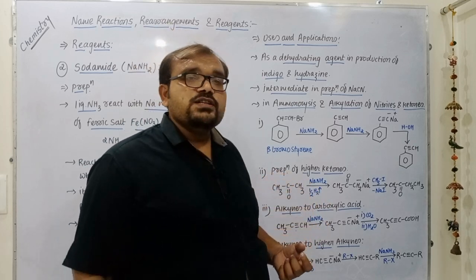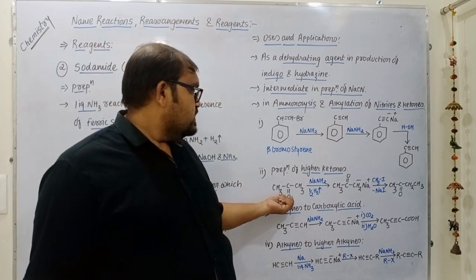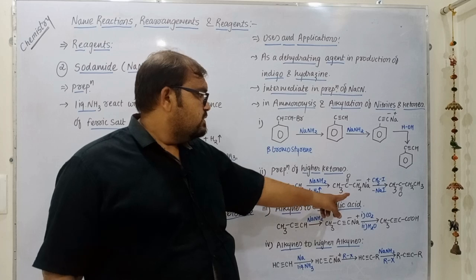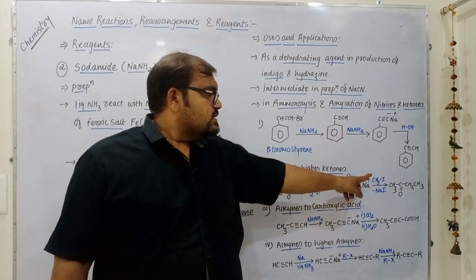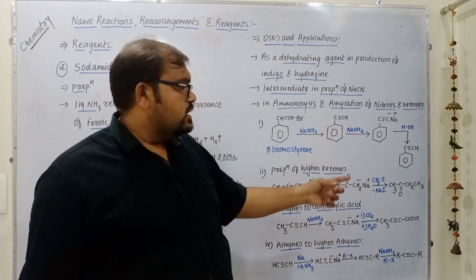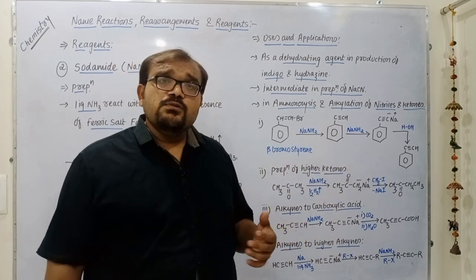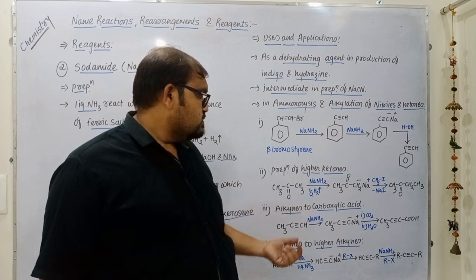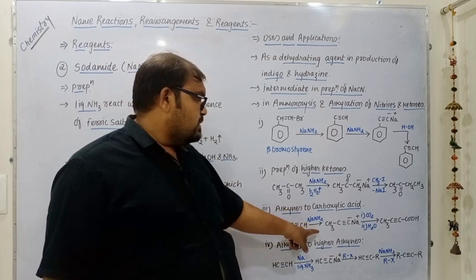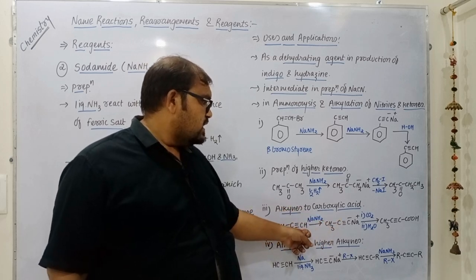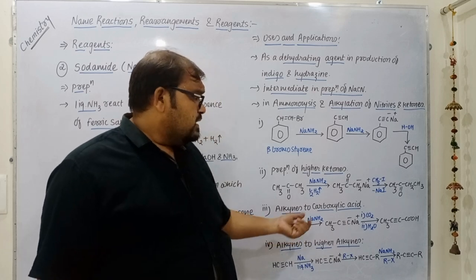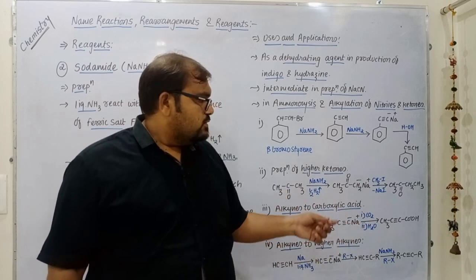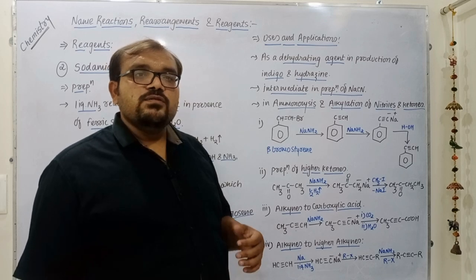Sodamide is also used for preparation of higher ketones: reaction of a ketone with sodamide removes one hydrogen atom from CH₃ to give a sodium salt, which then reacts with alkyl iodide; after loss of sodium iodide it gives a ketone with one more carbon. For alkynes to carboxylic acid conversion: reaction of alkyne with sodamide removes hydrogen to give the sodium salt of alkyne, which reacts with CO₂ followed by water to give a carboxylic acid.